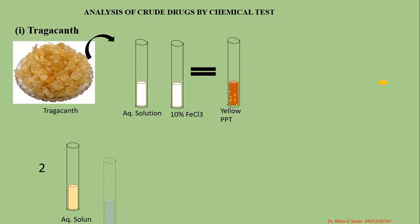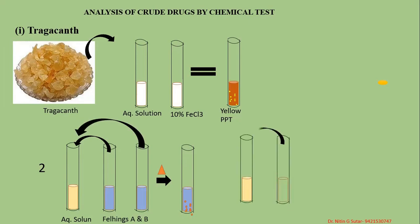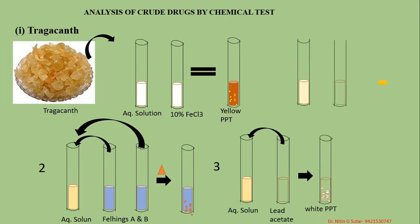The second test: take the aqueous solution of tragacanth, add Fehling's solution A and B, and heat that particular mixture. A reddish-brown color precipitate is formed. This is the second test. The third test: to the aqueous solution of tragacanth, add lead acetate. White color precipitates are formed. I will show you that white color precipitate.